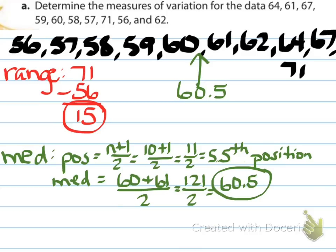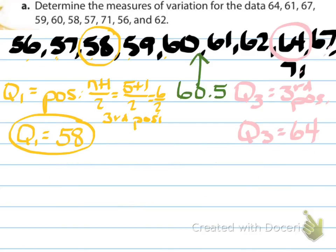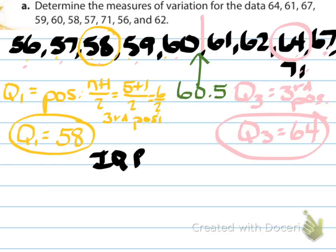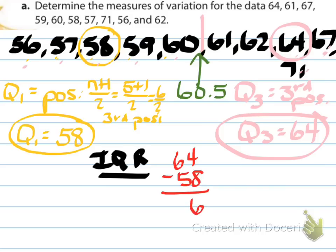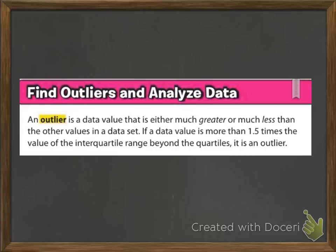For Q1, my median splits the lower half which has 5 values, so (5+1)/2 = 3rd position, giving Q1 = 58. For Q3, I count backwards from the end to the 3rd position, giving Q3 = 64. The IQR is Q3 minus Q1: 64 - 58 = 6. That's a small number, which means the middle data are pretty close together.